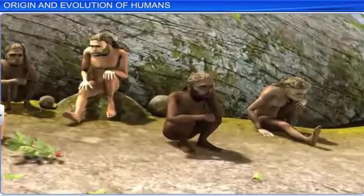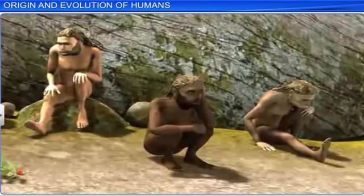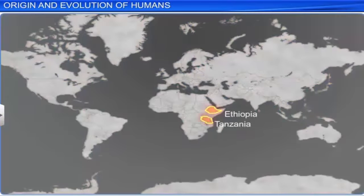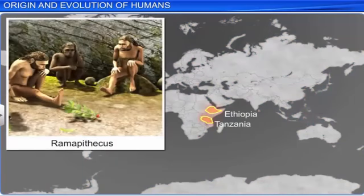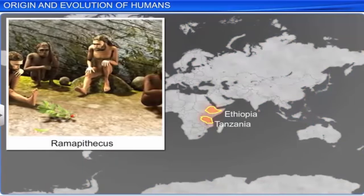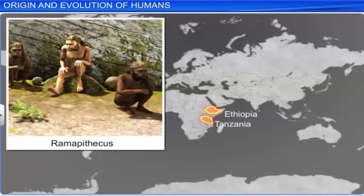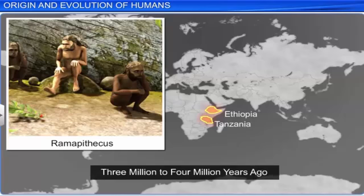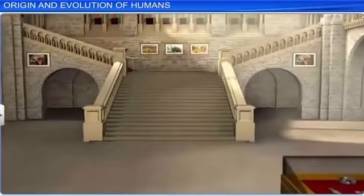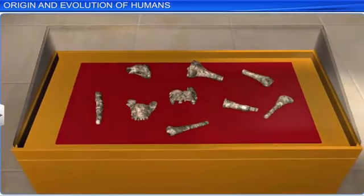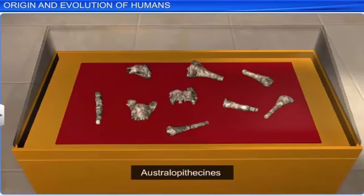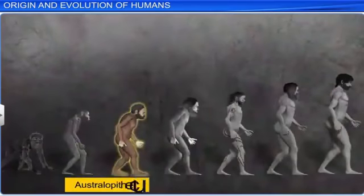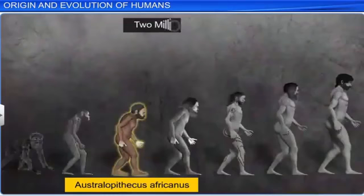Fossils of man-like bones have been discovered in Ethiopia and Tanzania. These bones suggest that Ramapithecus, who had hominid features, had lived in Africa almost 3 million to 4 million years ago. The fossils found in the grasslands of East Africa narrated the next stage of the story of human evolution. They suggested that Australopithecines of the genus Australopithecus africanus lived here around 2 million years ago. The main feature of the Australopithecines was that they hunted with stones but were primarily fruit eaters.